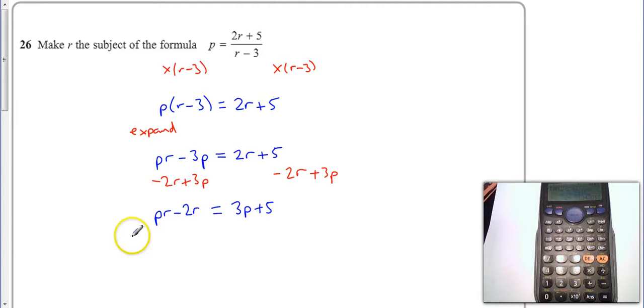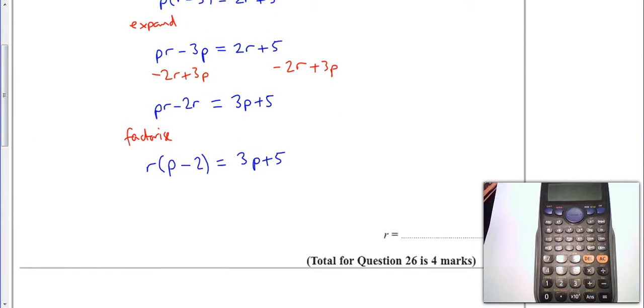Now what I'm going to do is I'm going to factorise. I'm going to factorise so this side stays with 3p plus 5 and then I've got a common factor of r. So I'm going to do p minus 2 here and then I'm at the home straight now.